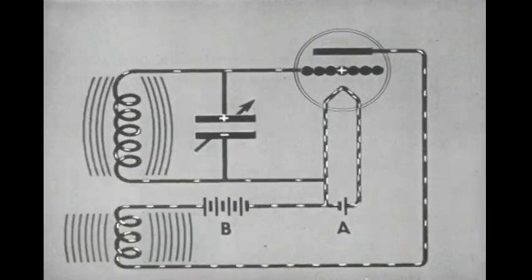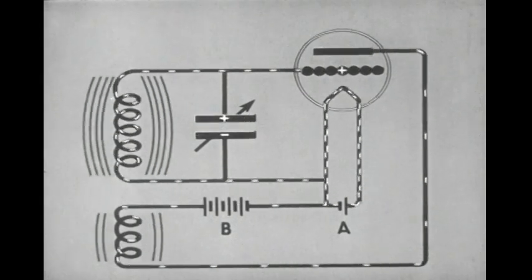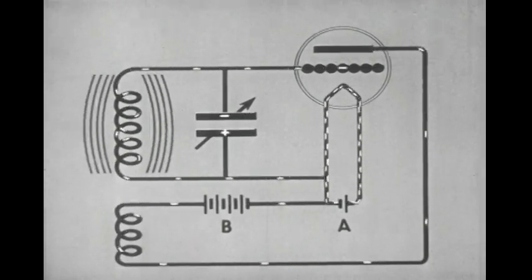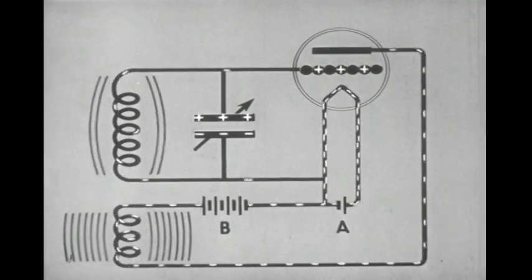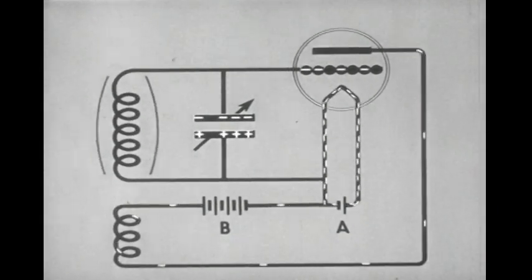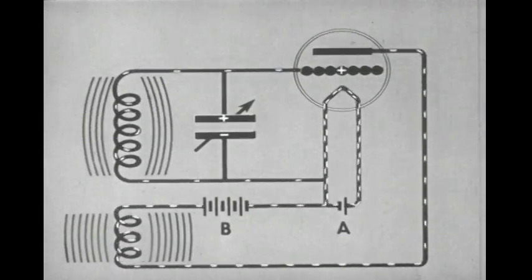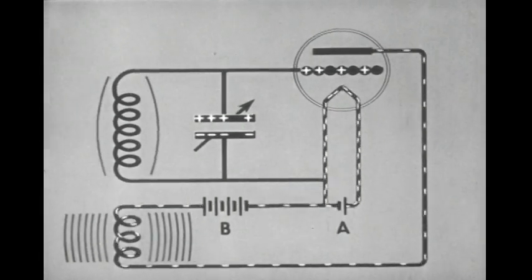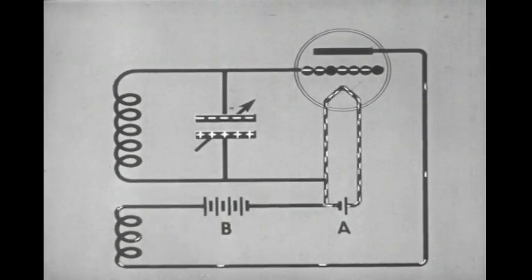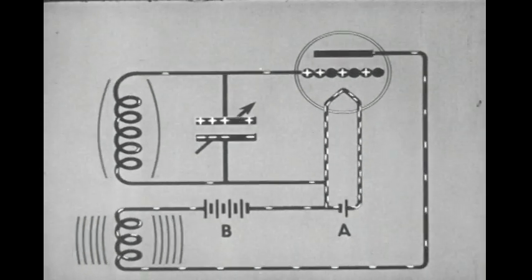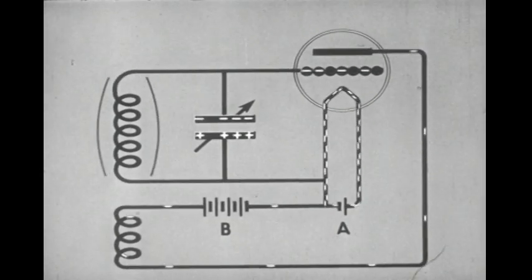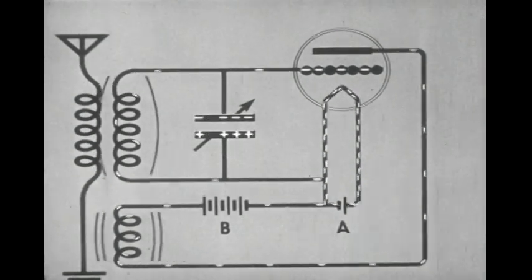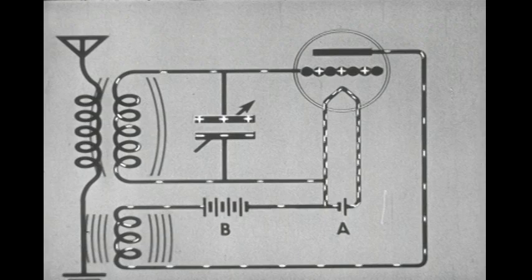The frequency at which the current alternates is determined by the resonant frequency of the grid circuit, which may be controlled by a variable condenser. The current may alternate millions of times per second. Direct current from the B battery is thus changed to a high-frequency alternating current. The grid circuit of the oscillator may be coupled to an antenna in the sending station, where energy is transferred by induction from the grid circuit to the aerial-ground circuit, and electromagnetic waves are radiated out into space.